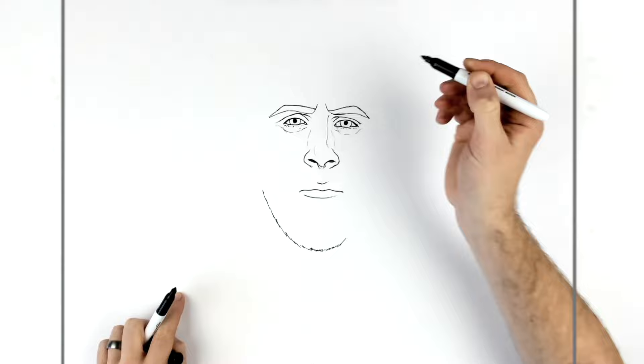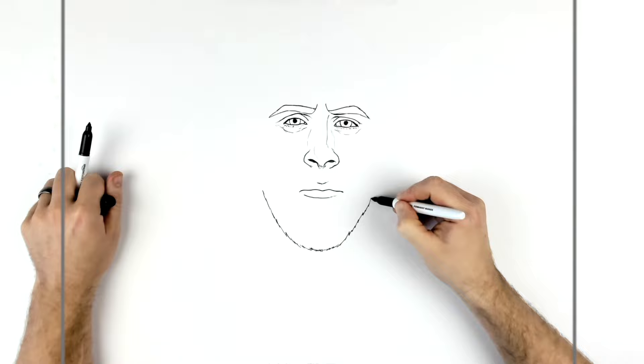Eyebrows to nose is about the same distance as nose to chin — like if he didn't have a beard, because the beard hair adds a bit of length. Here to here roughly is the same as here to his chin, then you just go down a little bit more. Roughly speaking, nose to bottom lip is about the same as bottom lip to where his chin would be without a beard — the beard gives it more length.